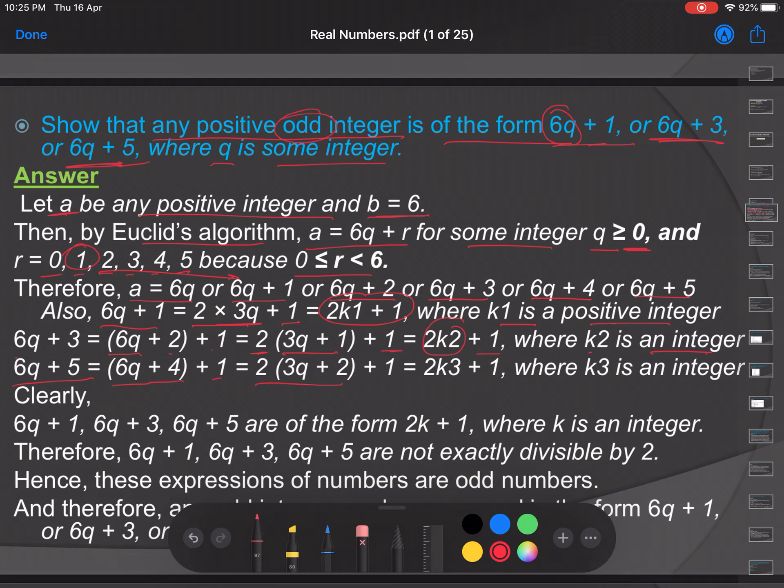Clearly 6q plus 1, 6q plus 3, 6q plus 5 are of the form 2k plus 1 where k is an integer, which is an odd integer. Therefore 6q plus 1, 6q plus 3, 6q plus 5 are not exactly divisible by 2.